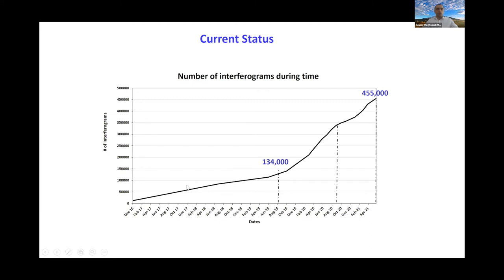Starting from September 2020, we had a slight decrease in our performance due to some server migration in Jasmine. In February 2021, we improved the performance of the system by buying more processing capacity from Jasmine. We almost doubled the number of cores, and this enables us to better achieve our objectives. At the moment, we are able to process about 10,000 Sentinel-1 acquisitions per month, and assuming that each acquisition has roughly a size of four to five gigabytes, we process about 40 to 50 terabytes of data each month.